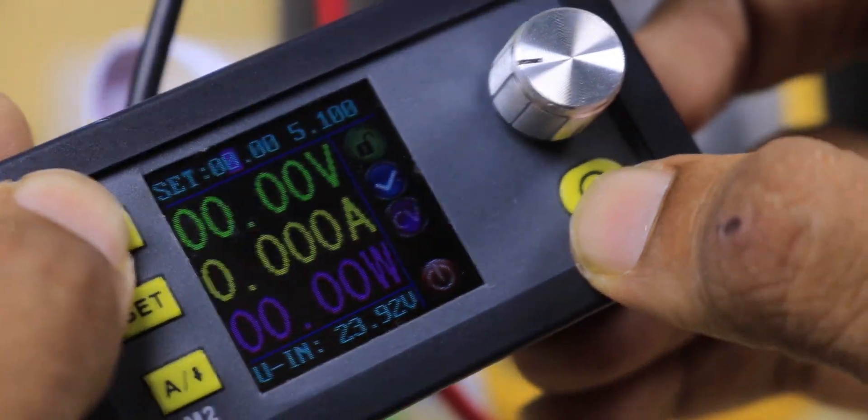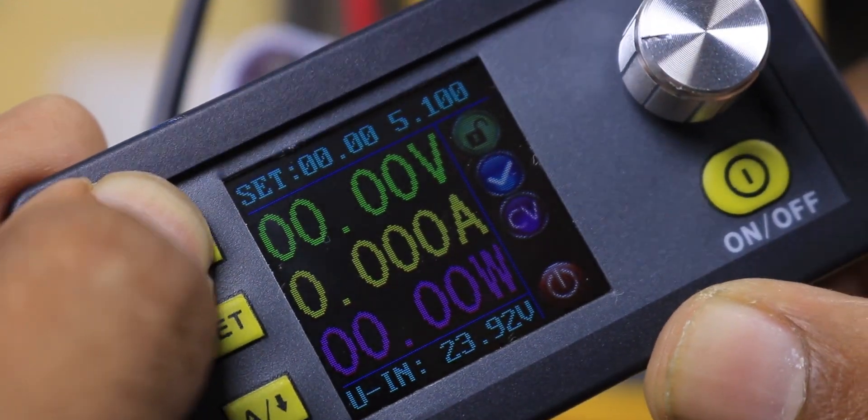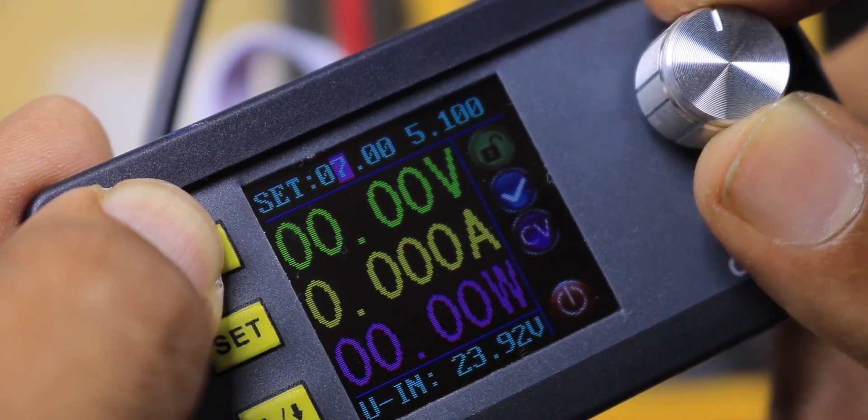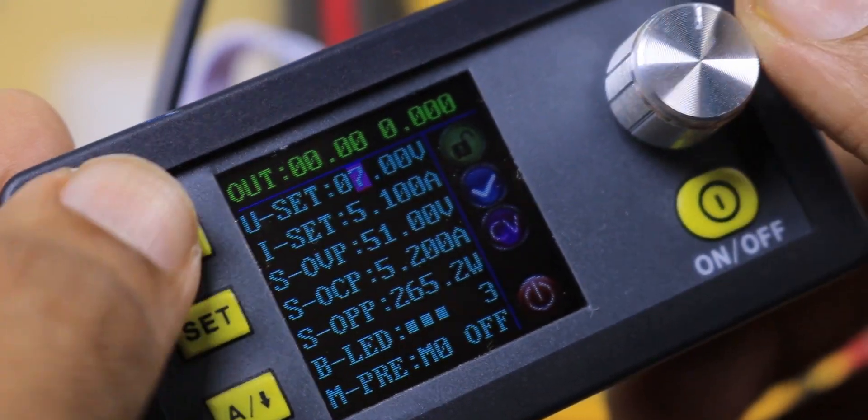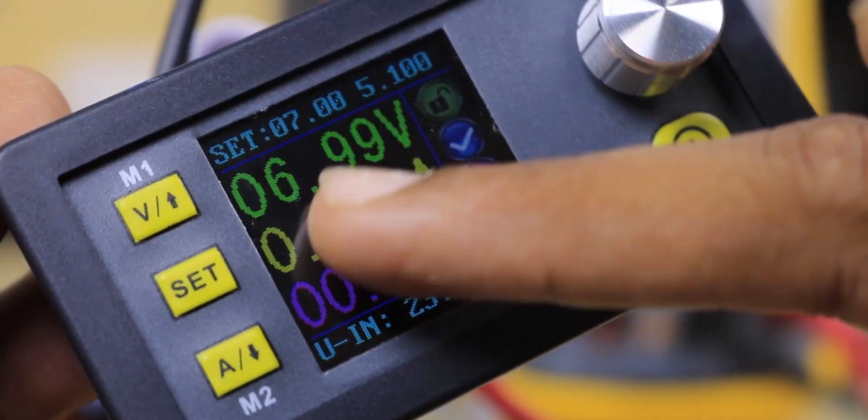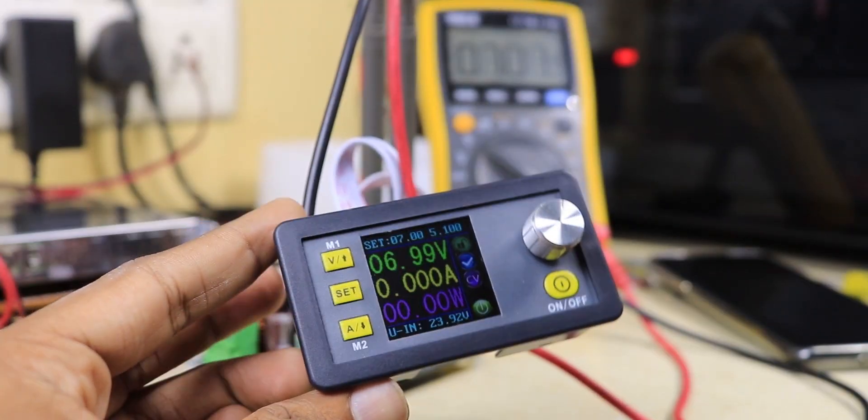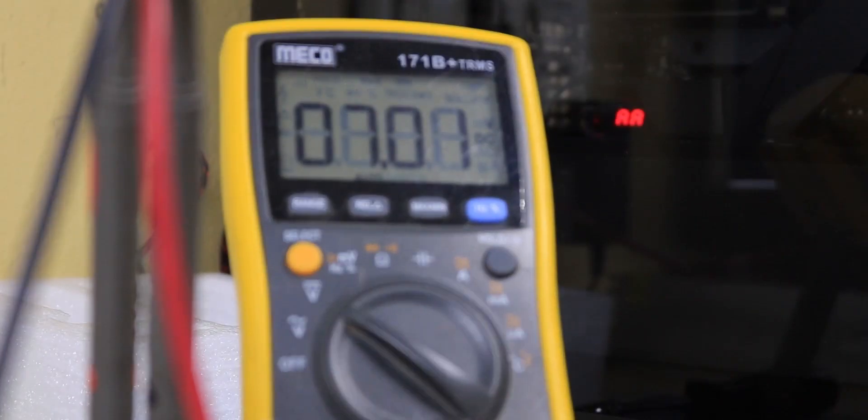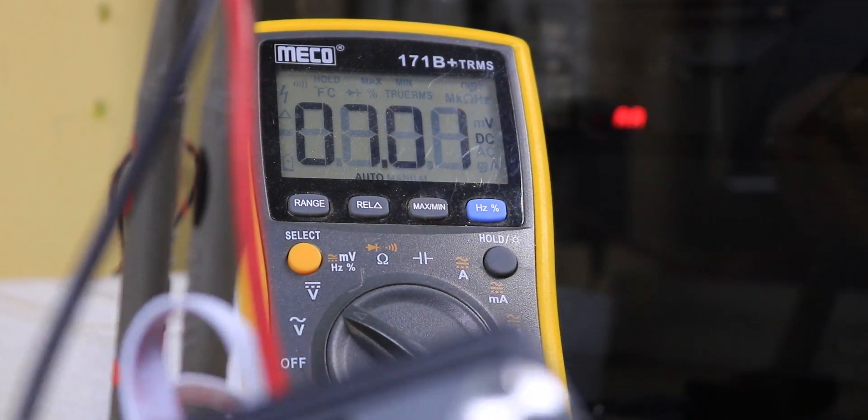For setting voltage, you can see this cursor. When I press the button it changes position, and when we use the encoder it changes the voltage. Let's set it to 7 volts and press set. When we turn on we should see 7 volts - shows 6.99 volts. On the multimeter we have 7.01 volts. That's okay, really small difference.